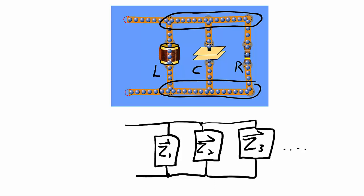In this video I want to show you how you can calculate the total impedance — that would be the impedance between those two points, or in this particular circuit the impedance between those two points — as well as the general rule and how that general rule is derived for calculating parallel impedances.